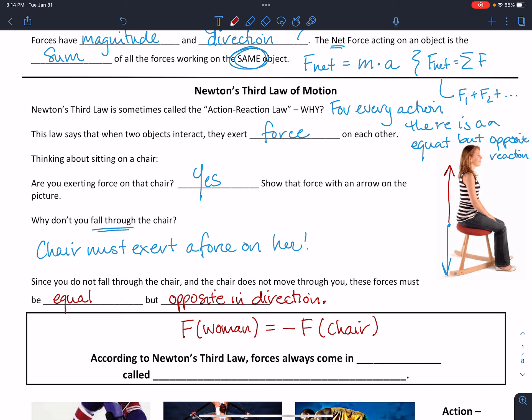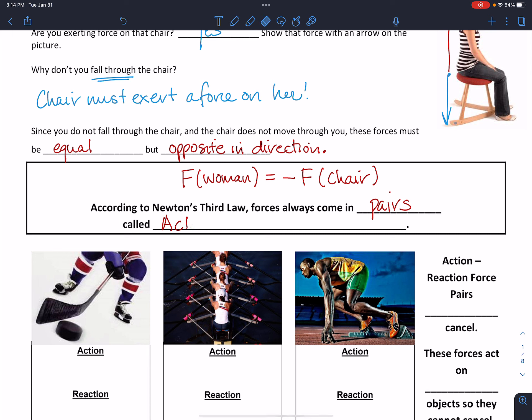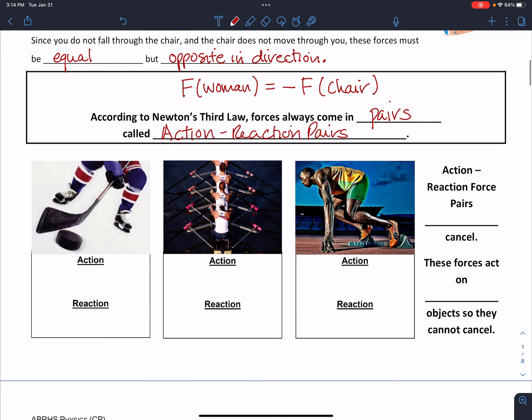So according to Newton's third law, forces are always going to be in pairs, and we call these pairs action-reaction pairs. So let's look at a couple of examples of how we identify these pairs.